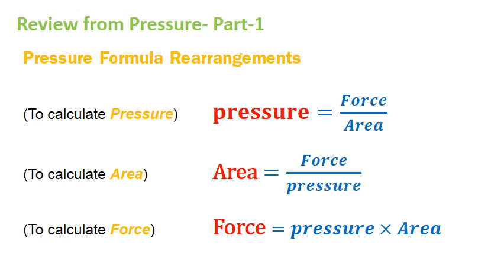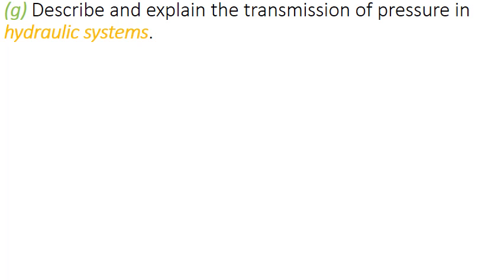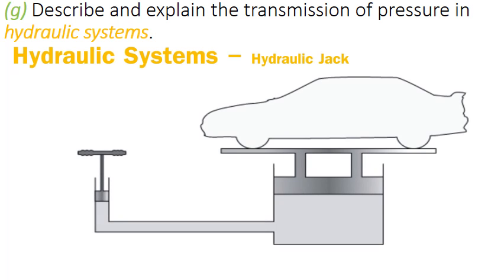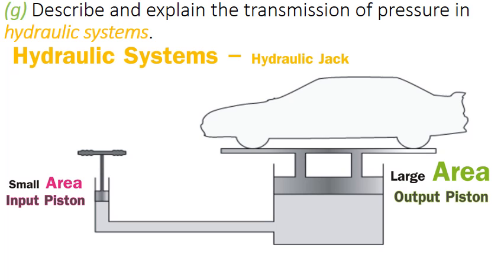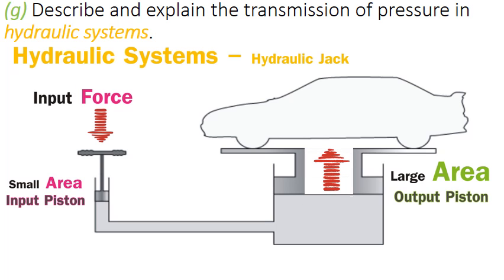Let's look at hydraulic systems. We'll start with the hydraulic jack. As you can see in the picture, on the left side we have the input piston, and on the right is the output piston. The input piston has a smaller area compared to the output piston. When we apply an input force at the input piston, we get an output force on the other end.